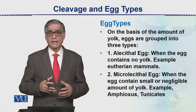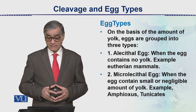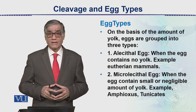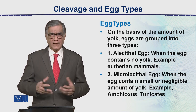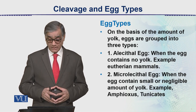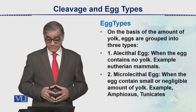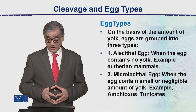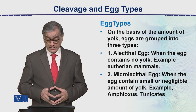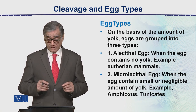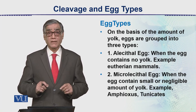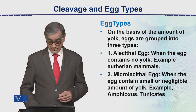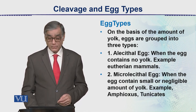Eutherian mammals are the specialized mammals — not kangaroo type; they are eutherians. Then there is the microlecithal egg, where the egg contains a small, negligible amount of yolk. This is the case in amphioxus or the tunicates, which are protochordates.